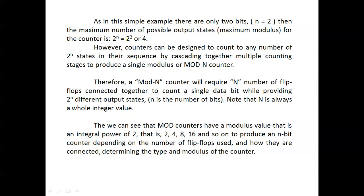The formula is N = 2^n, where n is the number of flip-flops used in the counter. If we use 2 flip-flops, we get mod 4. If n = 1, mod 2; if n = 3, mod 8; if n = 4, mod 16. The mod counter value goes 2, 4, 8, 16, and so on.